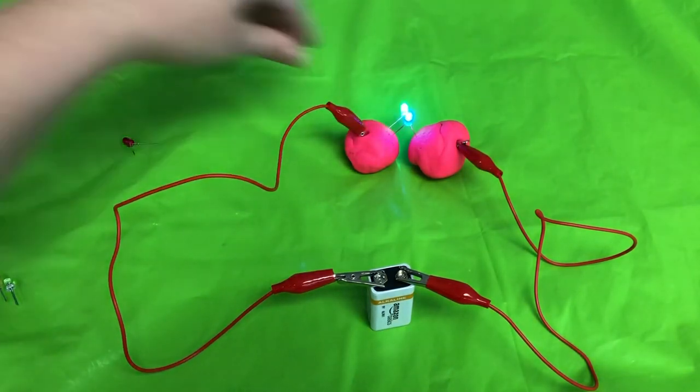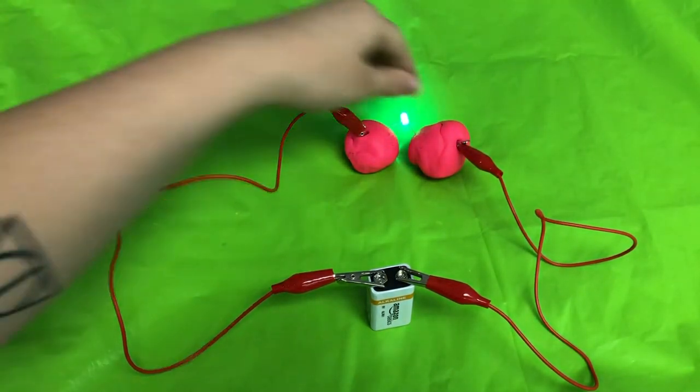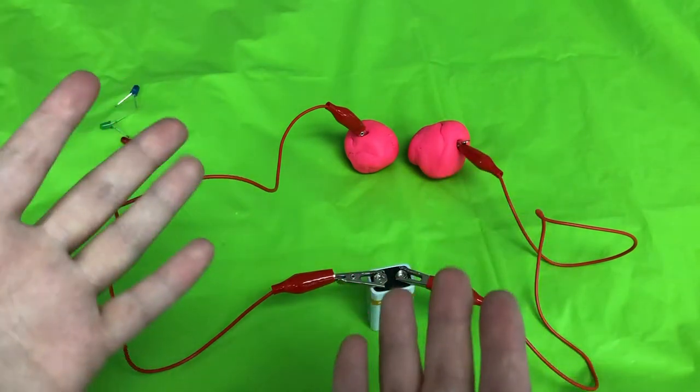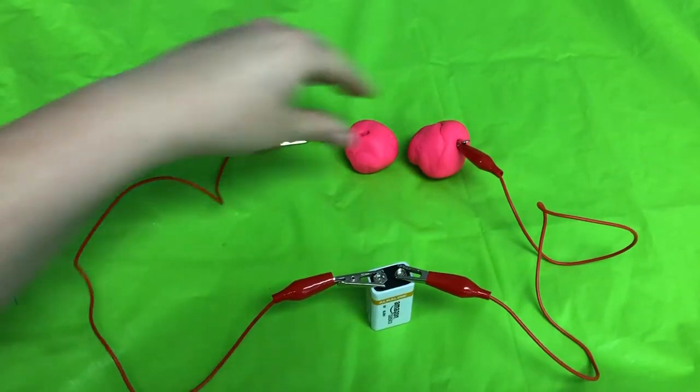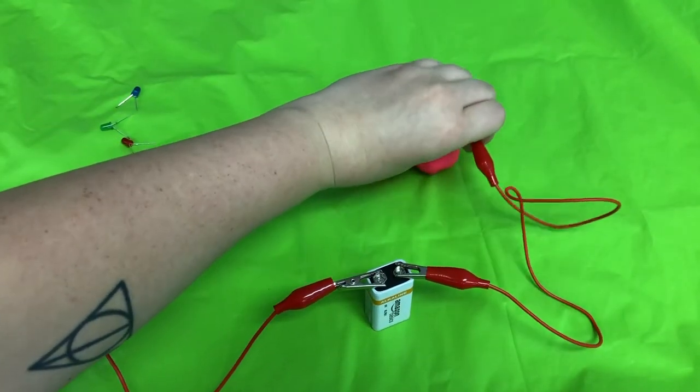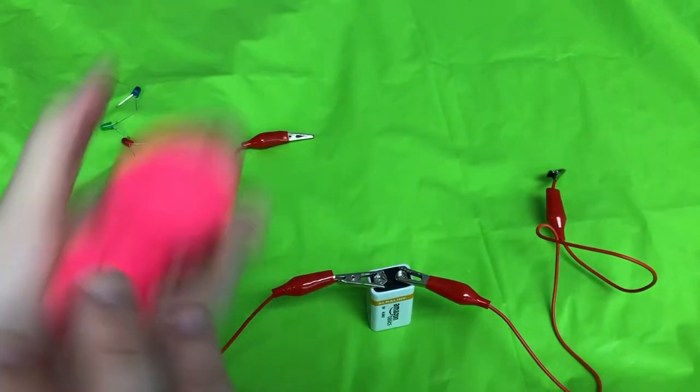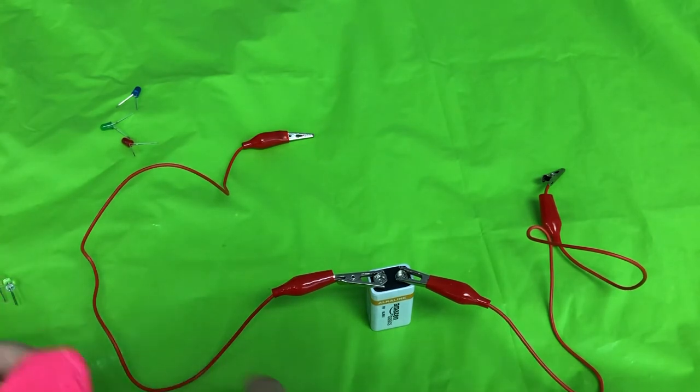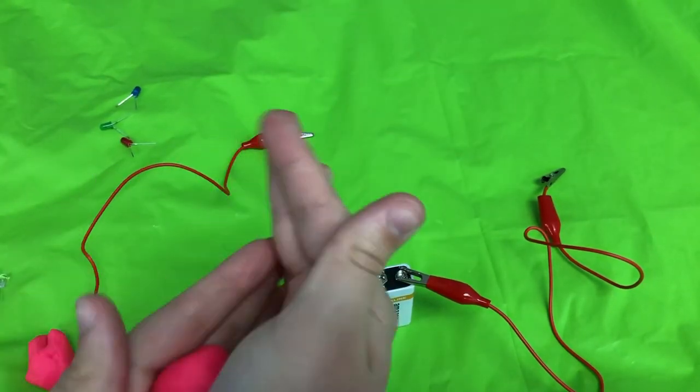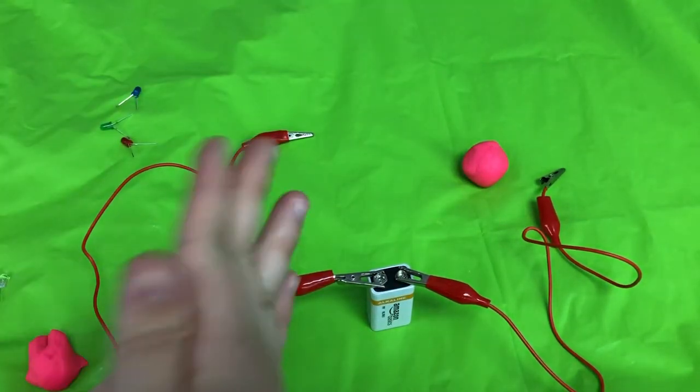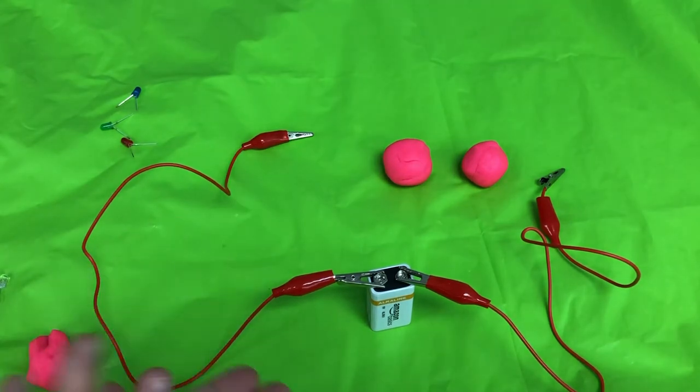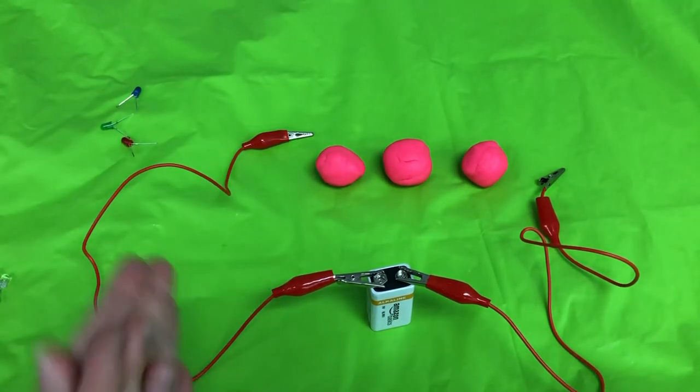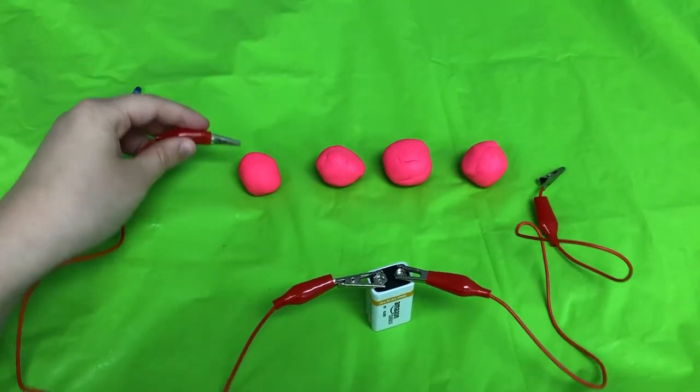You could also take out all of them and add more Play-Doh balls to your circuit. So I'm just going to take out my alligator clips here and mash back up my Play-Doh and then make let's do three Play-Doh balls or actually let's do four.